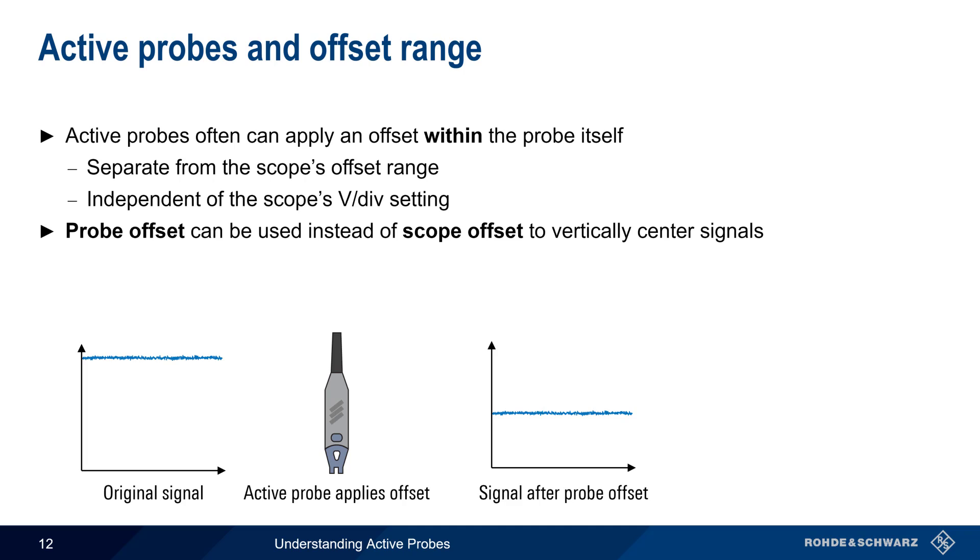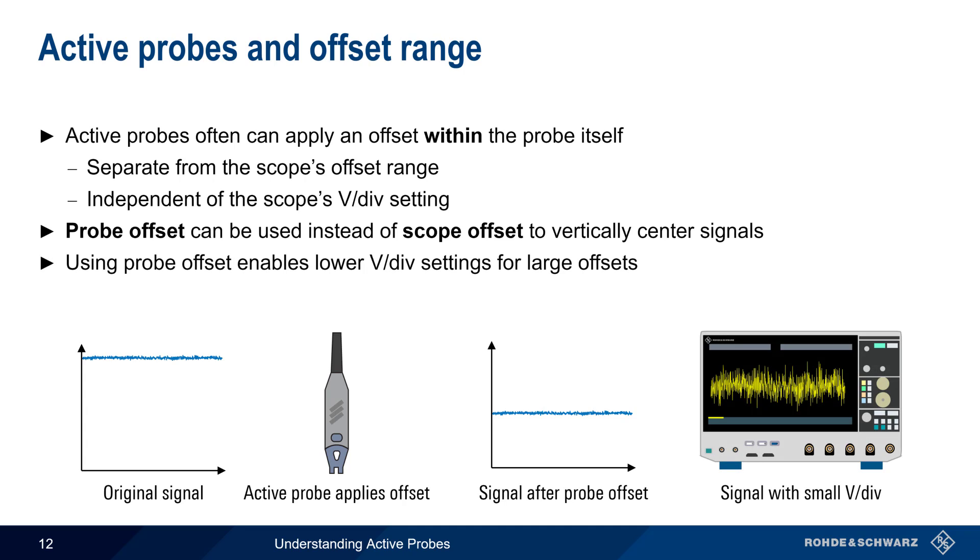Because probe offset is not limited by the volts per division setting, using probe offset enables greater vertical sensitivity when looking at signals with large offsets. This in turn improves the achievable vertical resolution and the ability to see and/or measure smaller signal details.